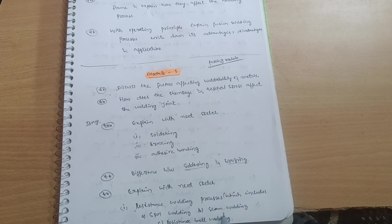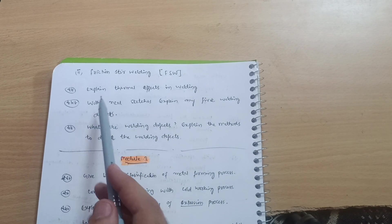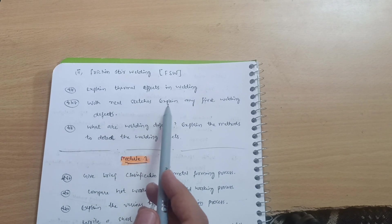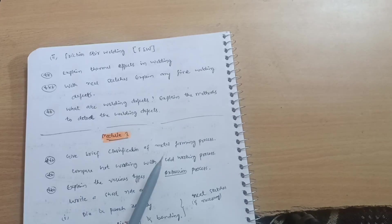Compare, explain with neat sketch resistance welding process, which may include spot welding and seam welding, resistance butt welding, and next one may be friction stir welding FSW. Explain thermal effects in welding with neat sketches. Explain any five welding defects. What are the welding defects may be the question. Explain the methods to detect the welding defects. This is all about Module 5.